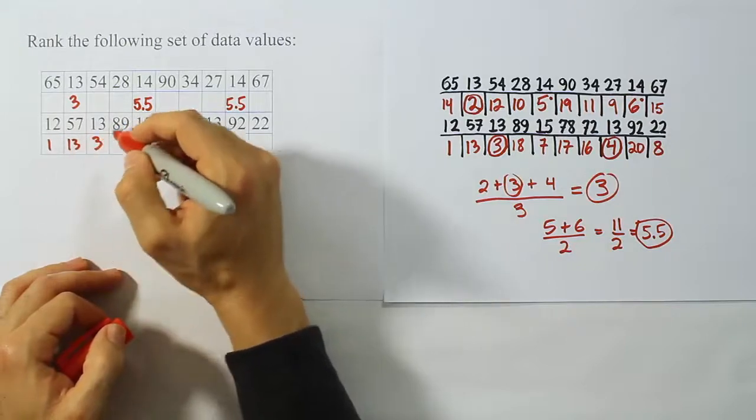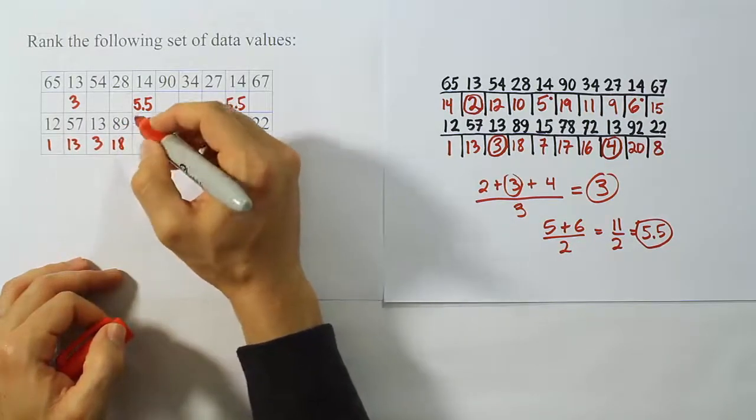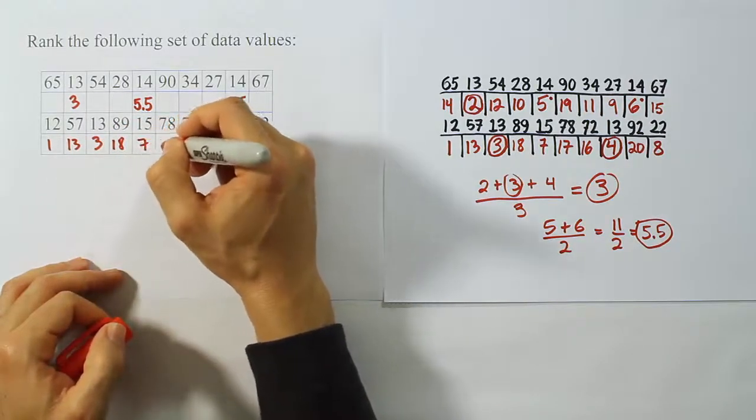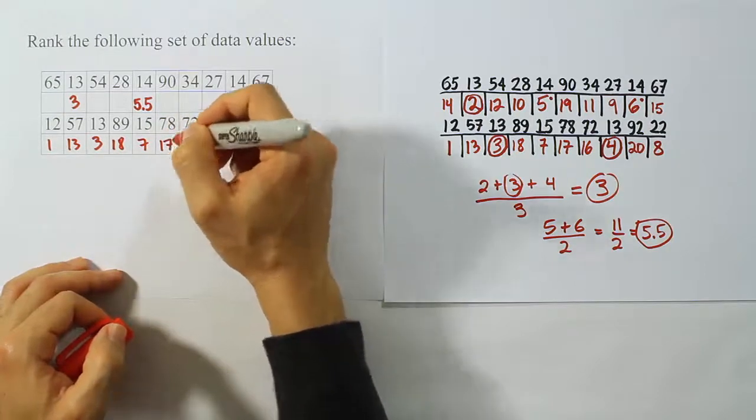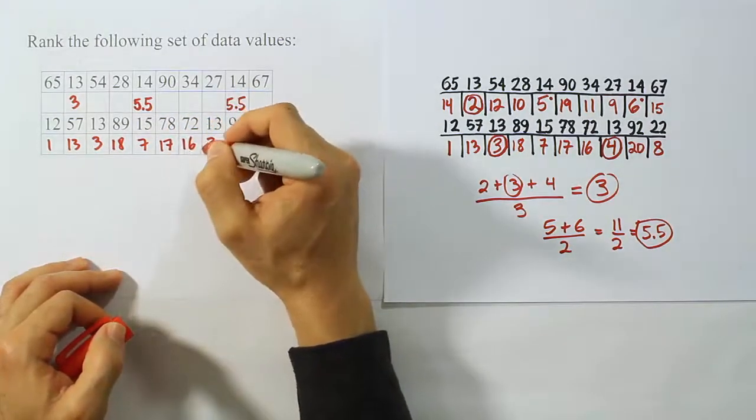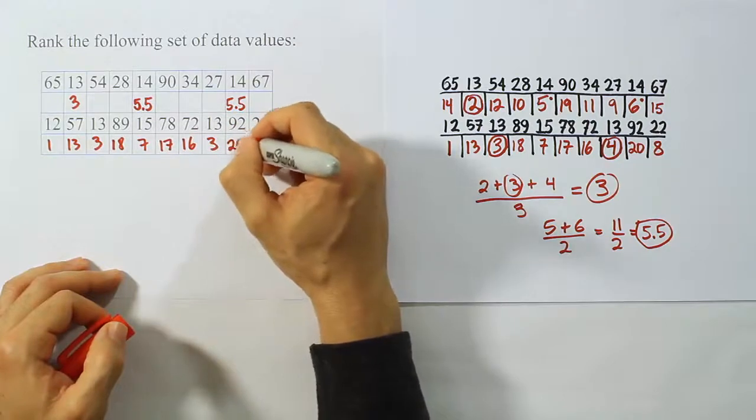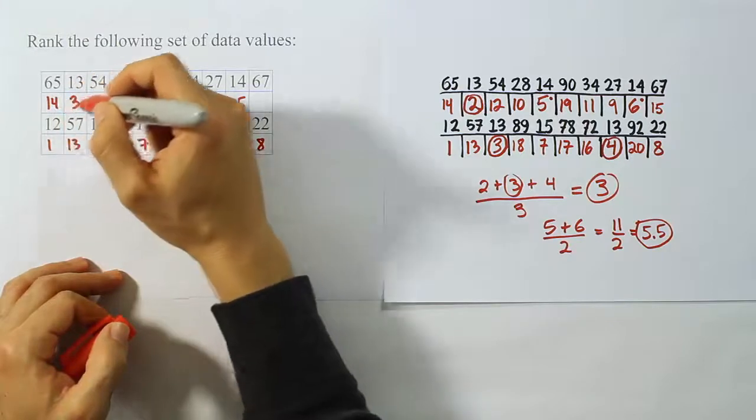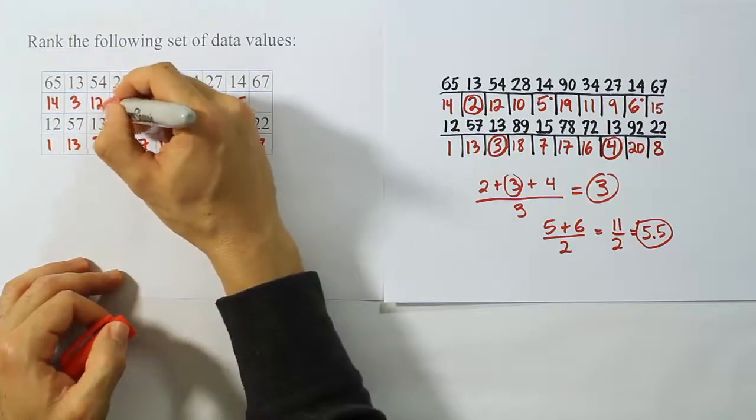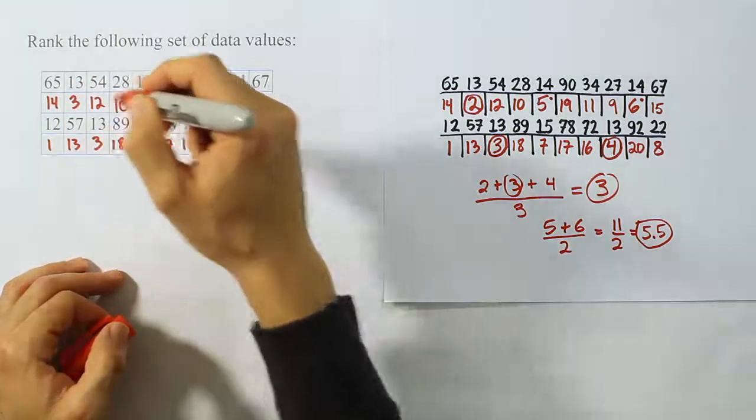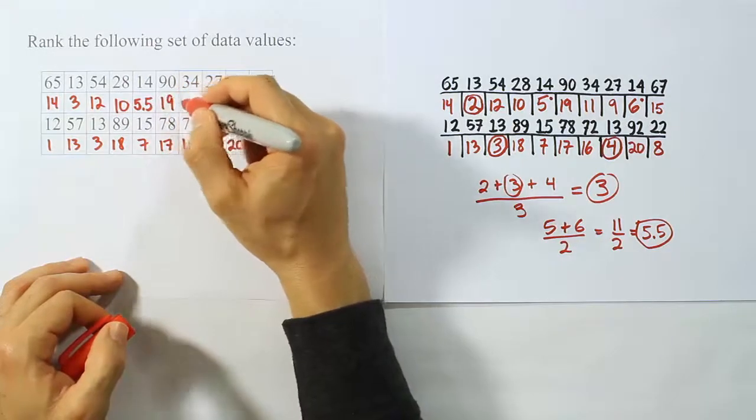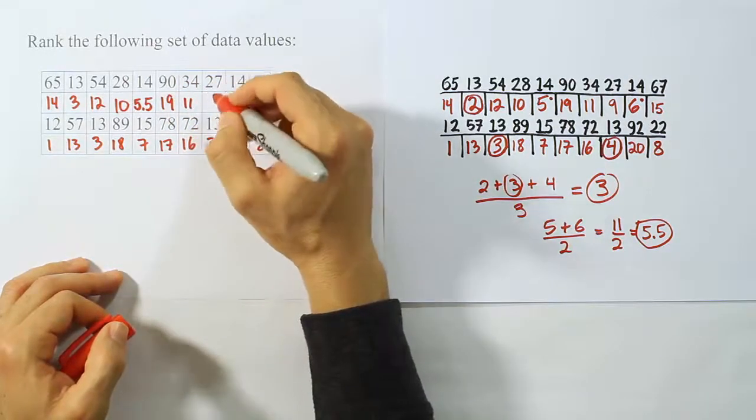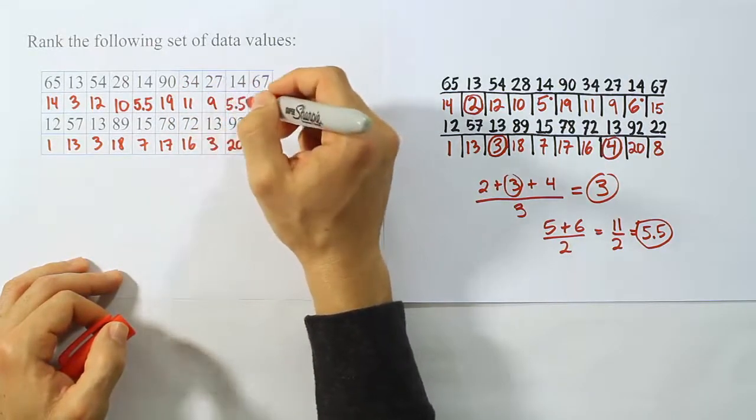So 1, 13, then 18, then 7, then 17, then 16, then 20, and then 8. Alright, and then it'll be 14, 12, 10, 19, 11, 9, and 15.